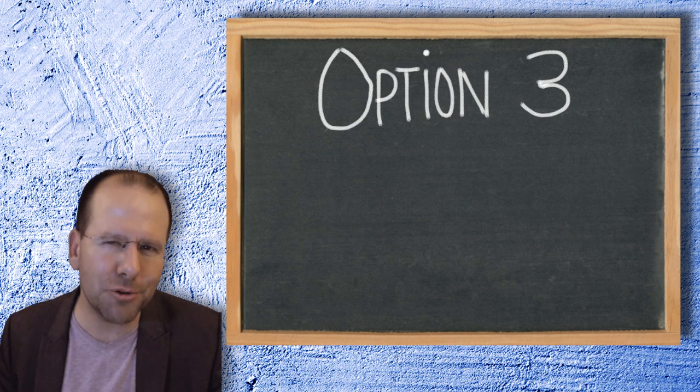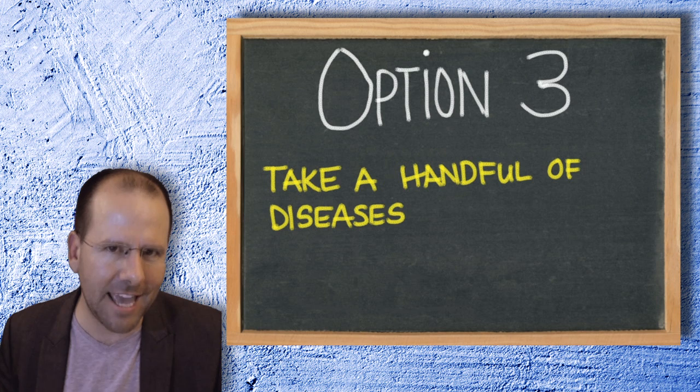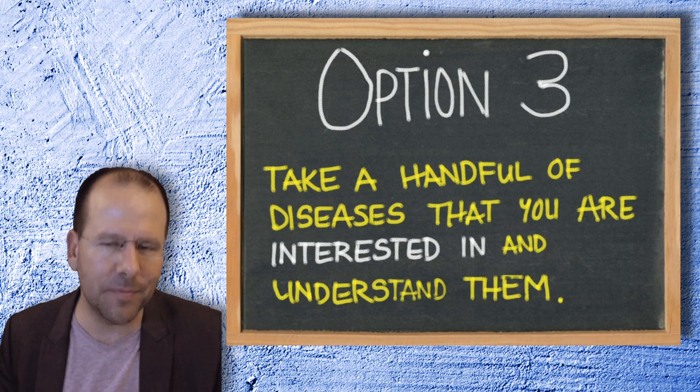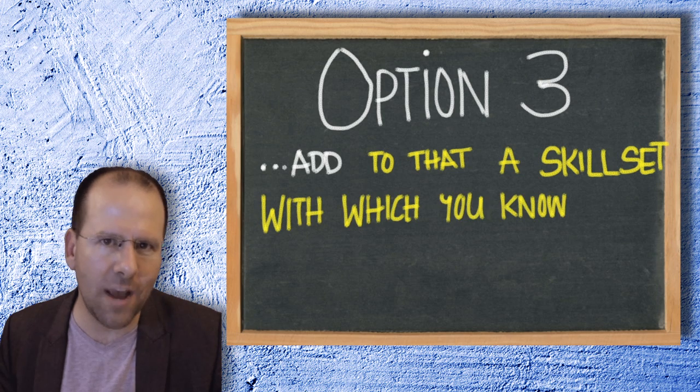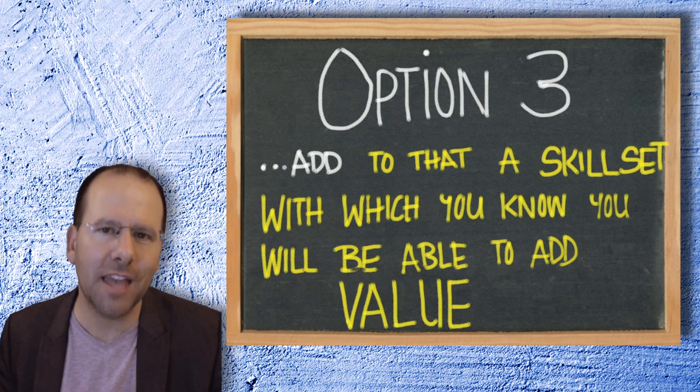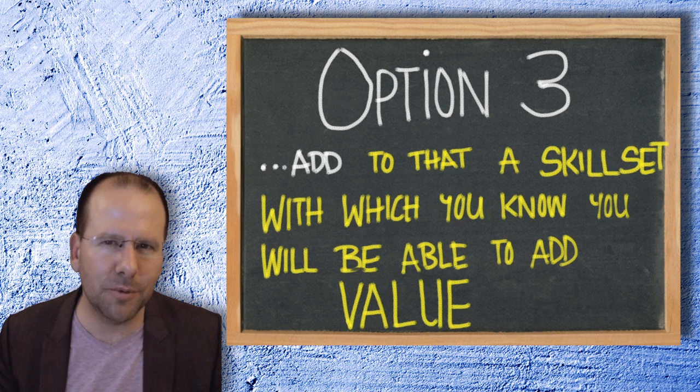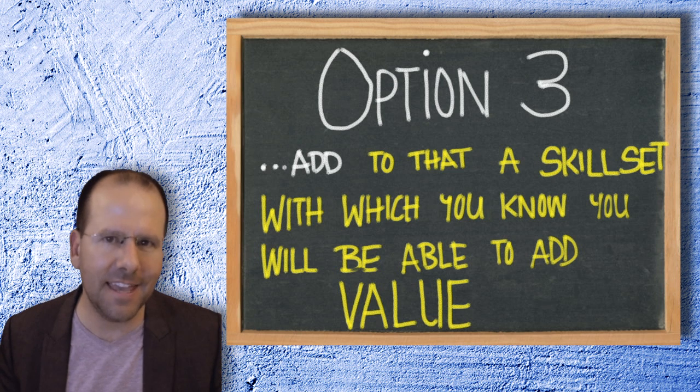And so that really brings me to option three, which is that you get a combination of option one and two. So you don't try and learn everything about every disease. You take a handful of diseases that you're interested in and understand them. Add to that a skill set, an area, a way that you're going to be able to add value, and use that as a combination as a sales pitch. So, for example, you might know a lot about HIV and a lot about health economics, and your value add is going to be in the area of health economics as it is applied to the HIV epidemic, for example.